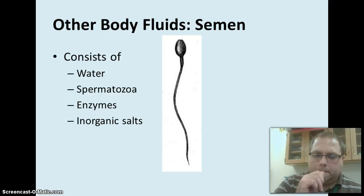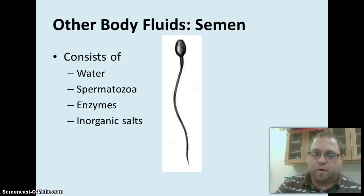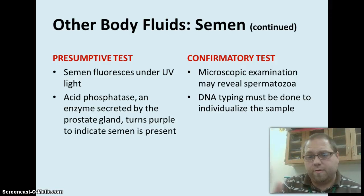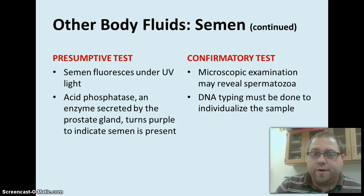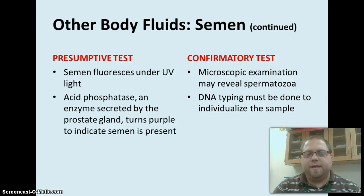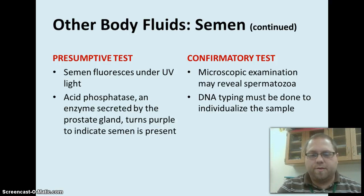Semen consists of a lot of things, but here's the basic overview. Water as well, spermatozoa which are the actual sperm cells, enzymes, and inorganic salts. With semen, there are presumptive tests where you can fluoresce it under UV light — if it doesn't fluoresce, it's not semen. Acid phosphatase is something you need to know — that's an enzyme secreted by a man's prostate, and when it turns purple with an acid phosphatase test, it indicates that semen is present. Then you can do a confirmatory test: you can use a microscope to determine if there's actually spermatozoa present, and then you can also do DNA typing.